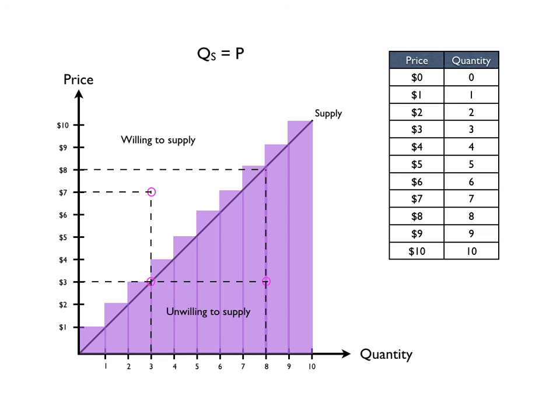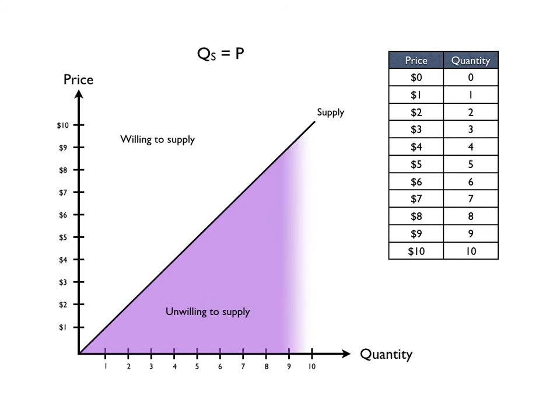The purple shaded area is unwilling to supply. Why is that? Because variable costs are the sum of marginal costs. If the firm is producing 10 units, the total variable cost to that firm is the area under the supply curve. It's not going to supply something where it can't cover its variable cost. It's got to cover at least its variable cost and then it will bring more to the market.